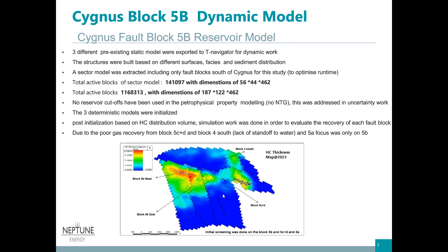I created a hydrocarbon pore volume view in T-Navigator and did my evaluation on the three models separately. Looking at the hydrocarbon pore volume, we decided we are only interested in block 5b, which is divided into two parts as well. Because there's very limited hydrocarbon in the other blocks and we had an issue with standoff and contact — Cygnus is a very thin reservoir — we didn't think it would be an economical success to go into that part of the field for now. So we focused on 5b for this study.